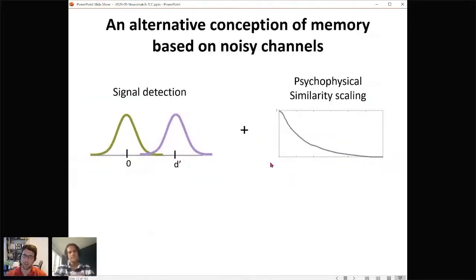What I want to argue is that it's completely wrong. In fact, all we have to do to understand those memory errors is think about just basic boring signal detection theory, adding one component, this psychophysical similarity scaling.